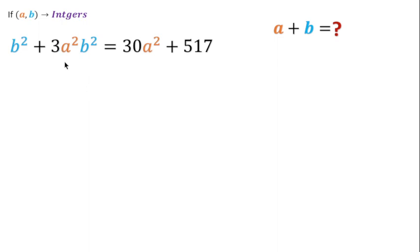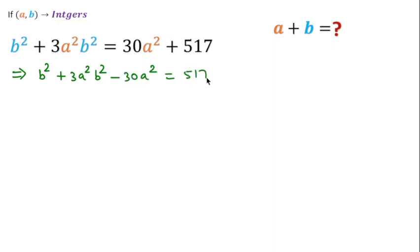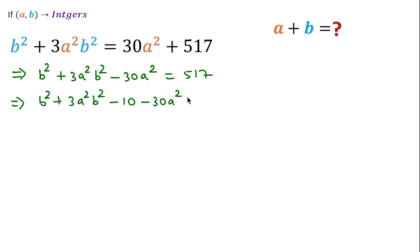To solve this equation, I will rewrite it as b² + 3a²b², then bring 30a² to the left side, equal to 570. Before taking any common factor, I will subtract 10 from both sides: b² + 3a²b² − 10, and minus 30a² equal to 517.